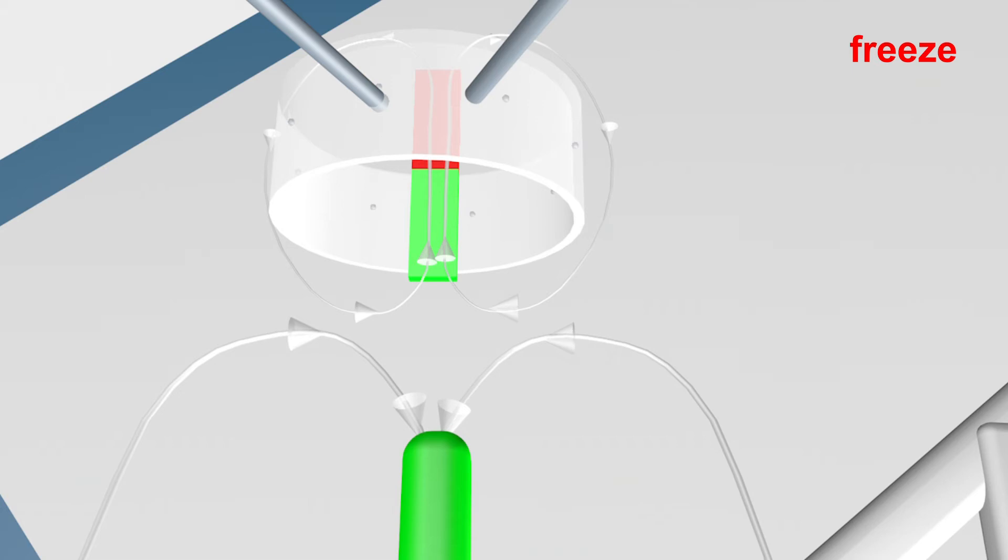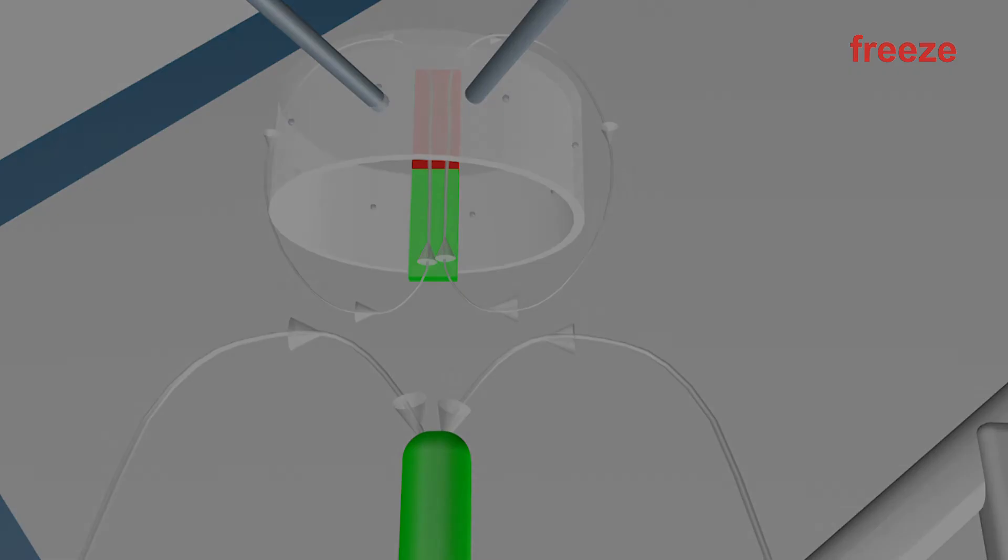However, since the free electrons do not move without friction in the aluminum, their movement stops as soon as I do not move the bar magnet any closer to the ring.